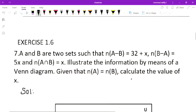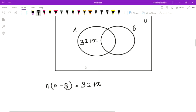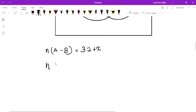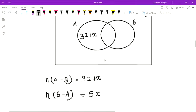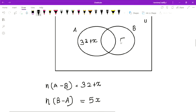Then what they are given? N of B minus A is equal to 5x. N of B minus A, B minus A is equal to 5x. So we will write here 5x.